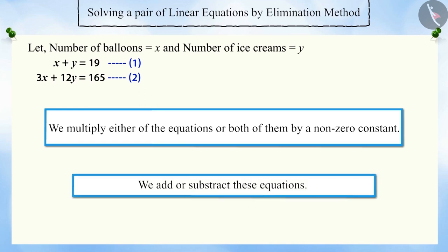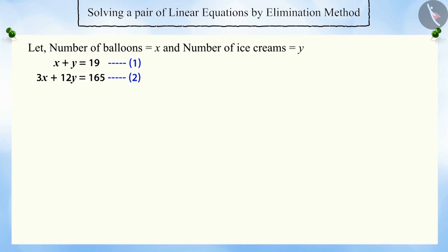You can see that it will be easier to multiply a constant in equation 1 because here, the coefficient is 1 for both the variables. In equation 2, the coefficient of x is 3. Hence, in order to make the coefficient value of x equal in both equations, we will multiply equation 1 by 3.